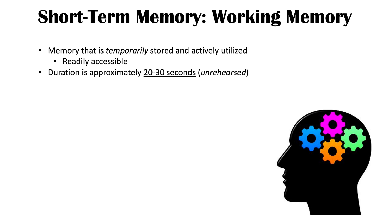If you were to remember something later and bring it to conscious awareness hours later, we would consider that to be in long-term memory. Short-term memory lasts only 20 to 30 seconds. This short-term memory system is actively utilized for a variety of processes such as problem solving and executive functioning. And because short-term memory is actively utilized, we call it working memory.